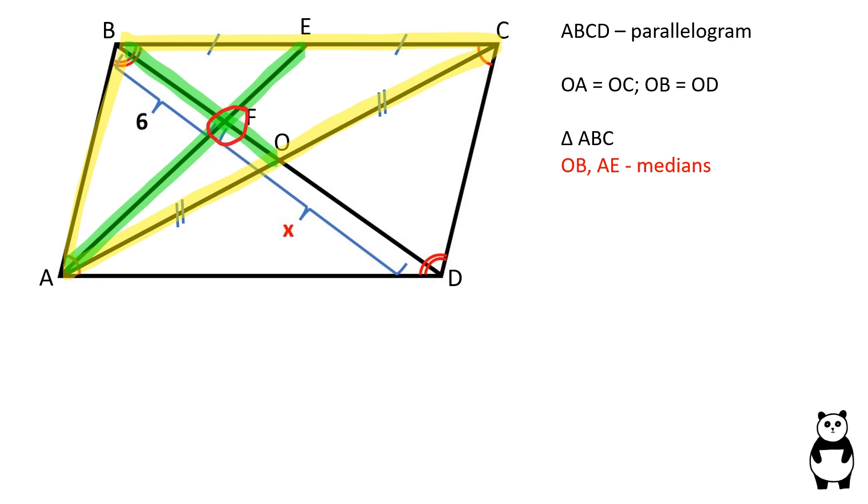The point of intersection of the triangle's medians divides the median's length in the ratio of 2 to 1. Therefore, OF over FB is equal to 1 over 2.